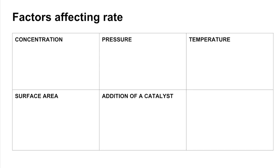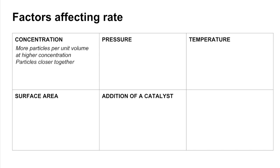Looking at the factors affecting rate. Concentration: if you increase the concentration, you're effectively increasing the number of particles in a set volume — more particles per unit volume at the higher concentration. That means the particles are going to be closer together, so they'll collide more frequently, and therefore you're increasing the number of effective collisions per second.